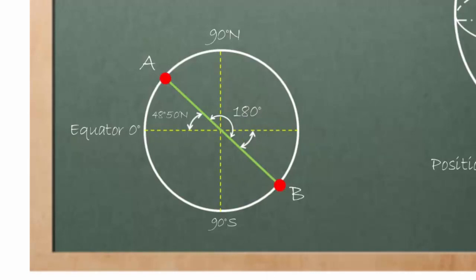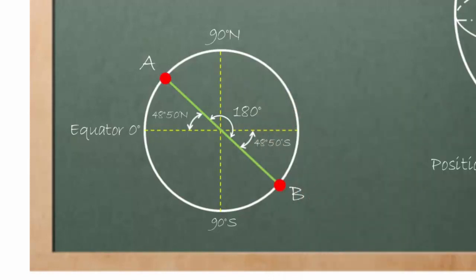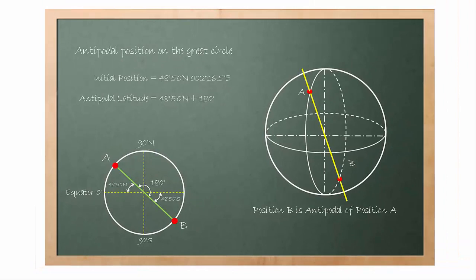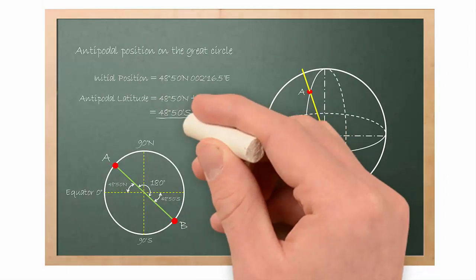This angle should have the same value with the opposite side of 48 degree, 50 minute. But it is in the southern hemisphere. Thus, the answer is 48 degree, 50 minute south.